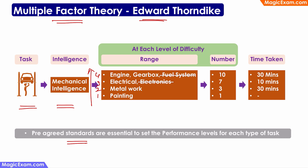For this particular mechanic that I want to measure: he can do painting — one task at level one; he can do metal work — one task at level two; he can do electrical — one task at level three — but he cannot do electronics. At level four, he can do engine work and gearbox work, but he cannot do fuel system work. I then look at how many problems he can solve in a typical day: at level four, he handles 10 different problems; electrical work, seven types of problems; metal work, three; and painting, one.